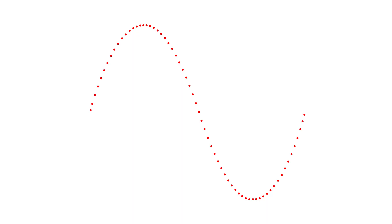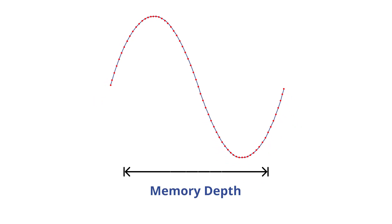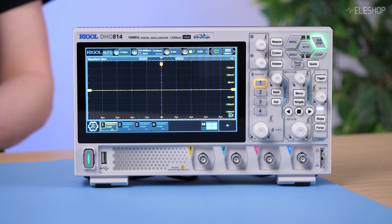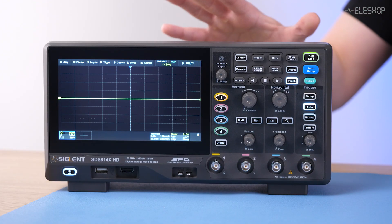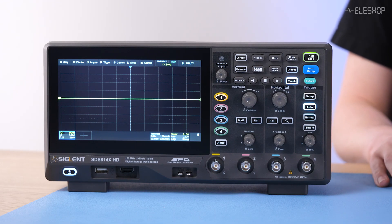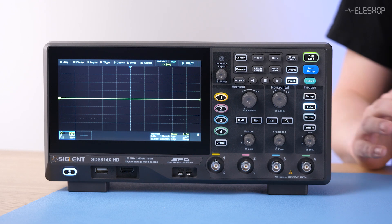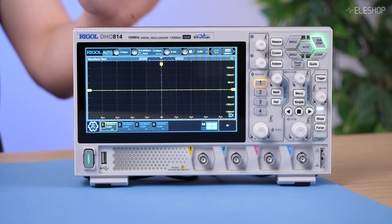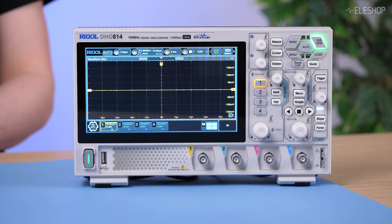Memory depth really matters, especially at lower time bases. It describes how many data points can be stored per signal, so sufficient memory depth at high sample rates is important. The Riegel offers up to 25 million points per channel when using a single channel, but only 5 million points per channel when all channels are active. In contrast, the Siglund provides 10 million points per channel even when all channels are in use. Although the Siglund offers twice as much memory in this mode, both oscilloscopes provide more than enough — even with the Riegel, you are unlikely to reach this limit quickly when zooming in on fine details.